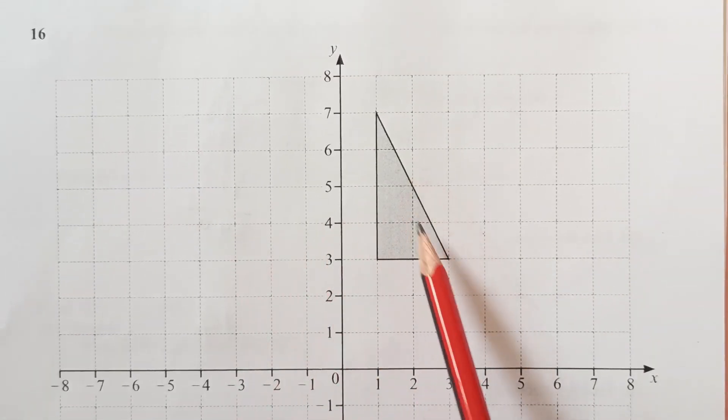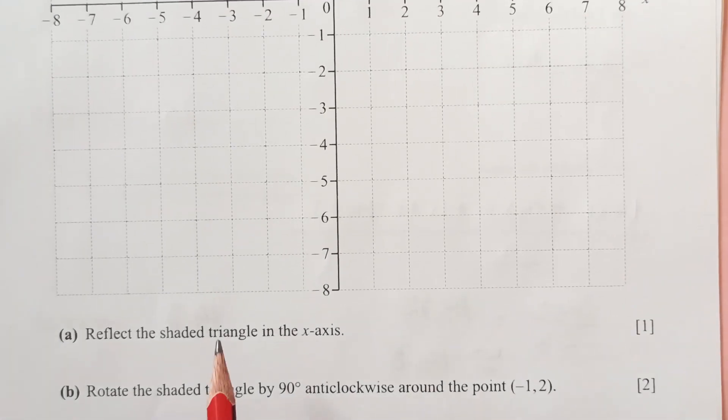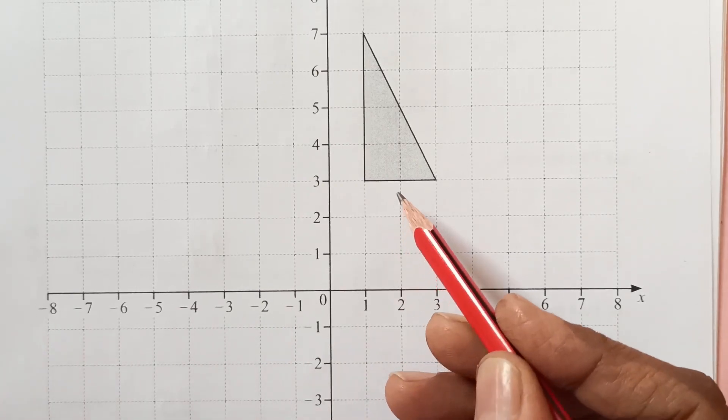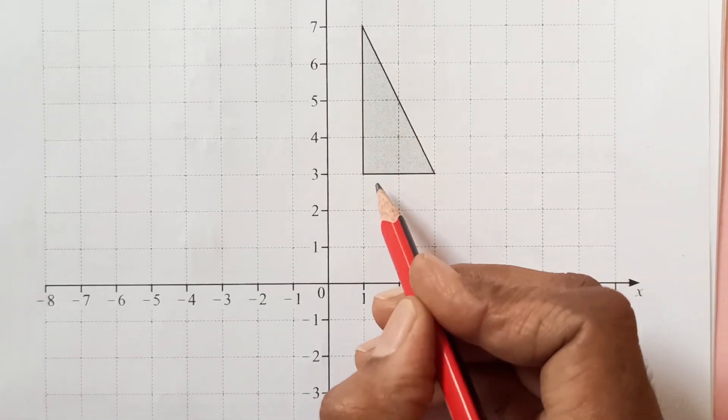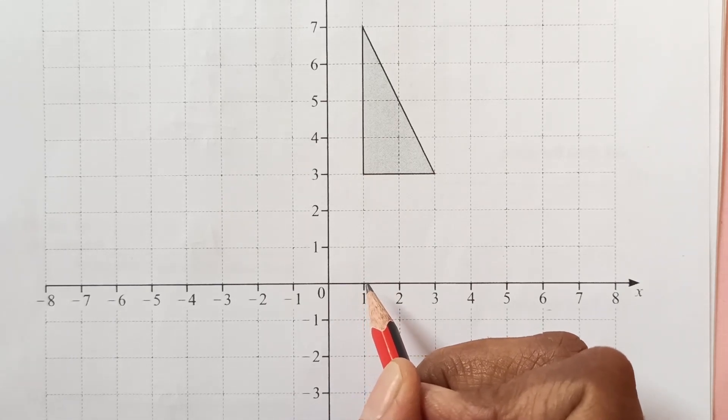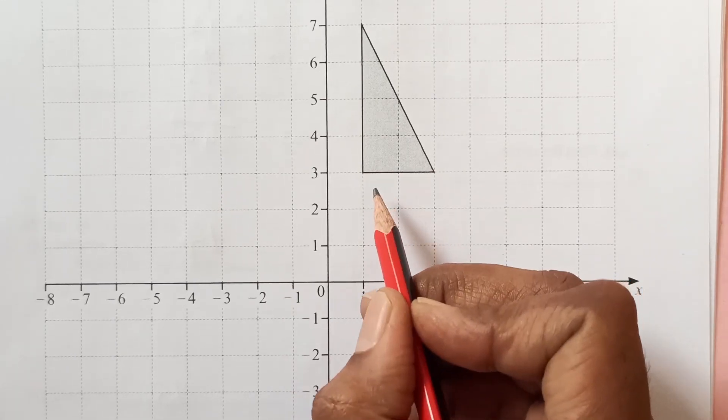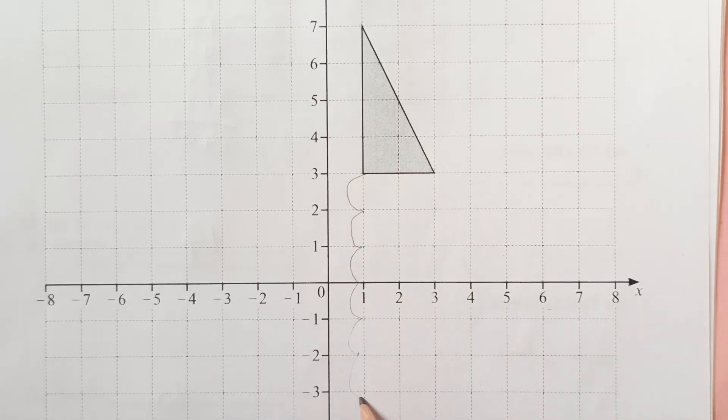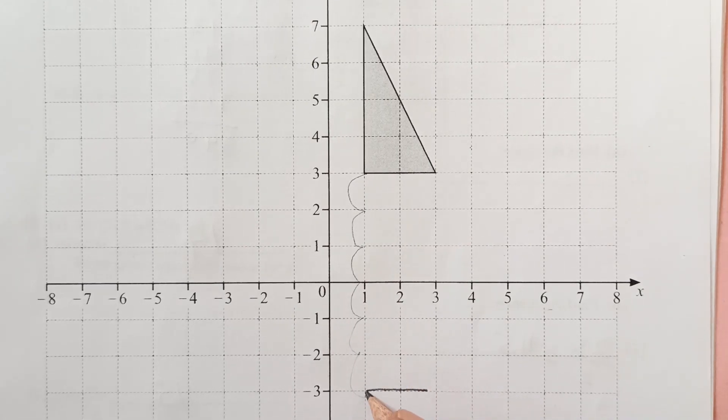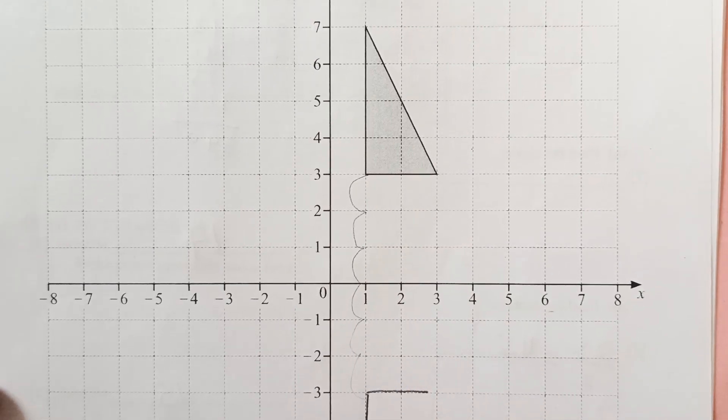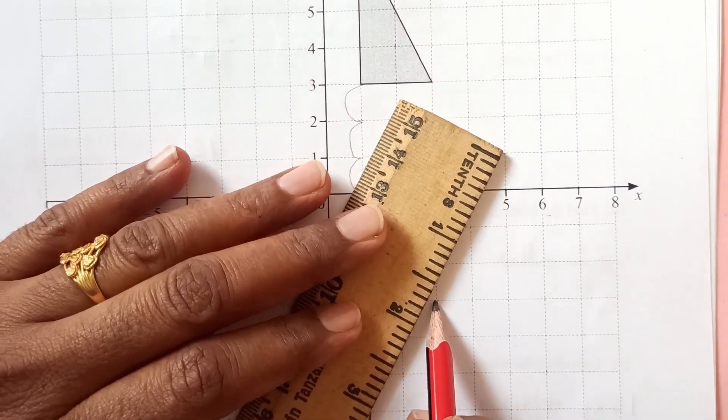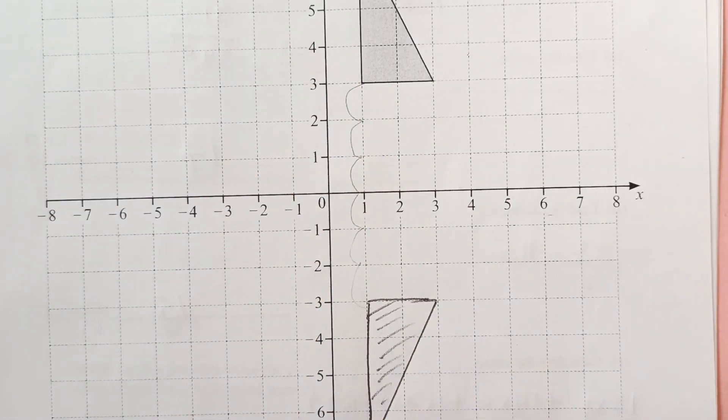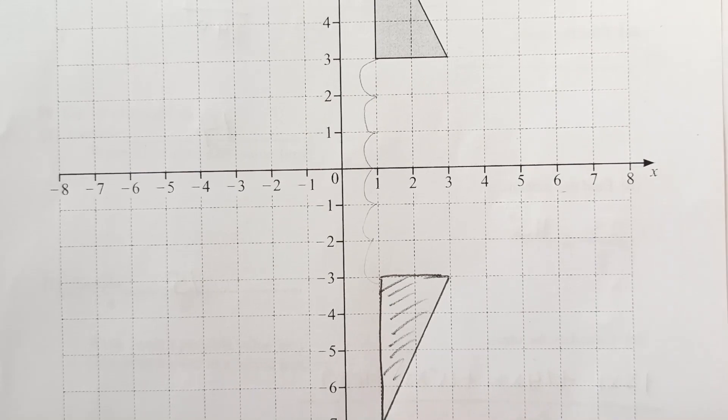Question number 16. We have a triangle here. The question is, reflect the shaded triangle in x-axis. So here is our x-axis. Now we are going to reflect. That means this shape will come this side. You see, from mirror line, you have here 3 units, I mean 3 squares up. So 3 squares down. This shape will come over here like this. Let's use a ruler to make the straight line like this. So this is the shape after reflection along x-axis.